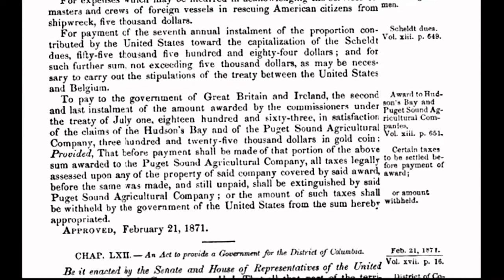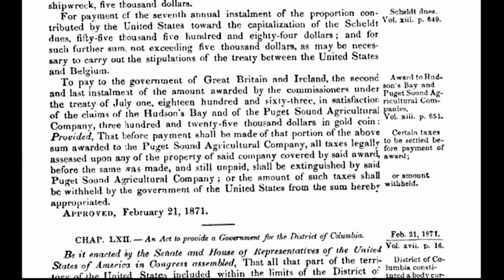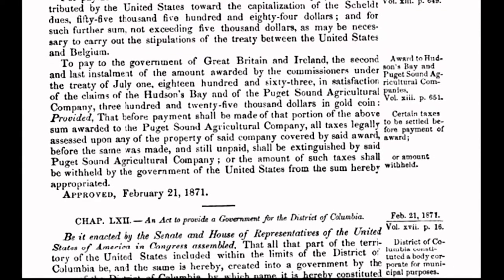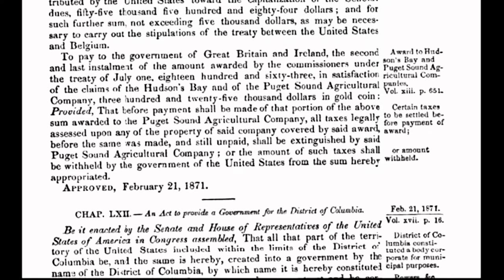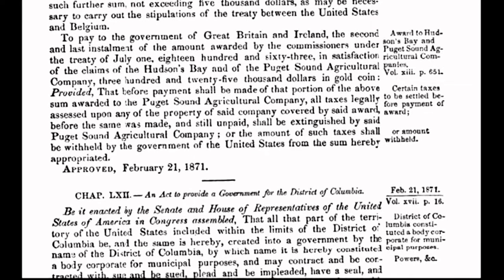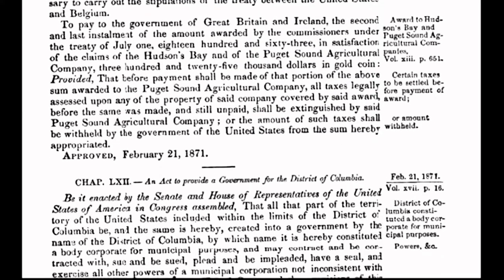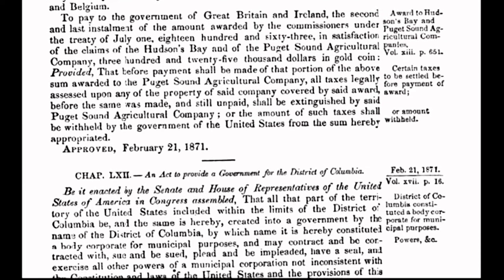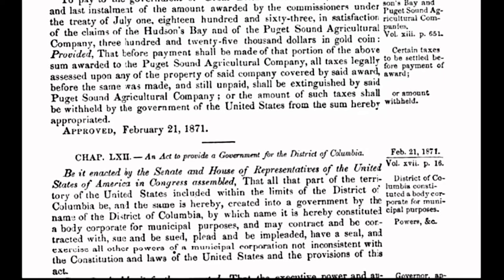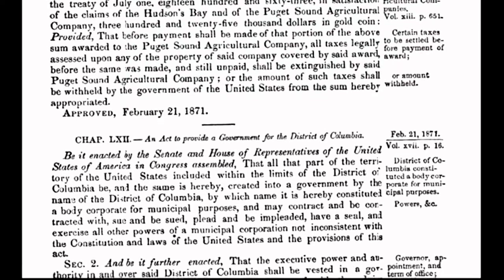With no constitutional authority to do so, Congress creates a separate form of government for the District of Columbia, a 10-mile-square parcel of land. The act was passed when the country was weakened and financially depleted in the aftermath of the Civil War. It was at that time a strategic move by foreign-interest international bankers, who were intent upon gaining a stranglehold on the coffers and neck of America. Congress cut a deal with the international bankers, specifically the Rothschilds of London, to incur a debt to said bankers.